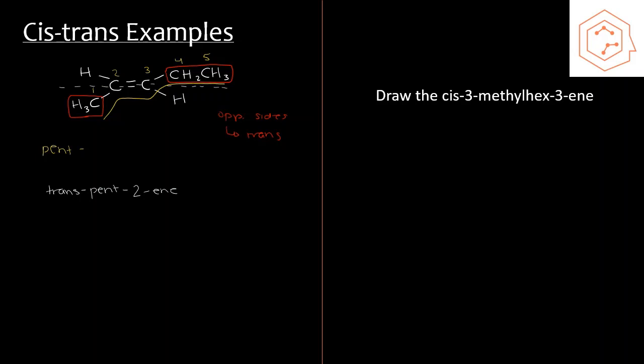To draw cis-3-methylhex-3-ene, we start by drawing the carbon double bond and build the rest of the structure around it. Since it's cis, both the longest alkyl groups will be on the same side. We can draw a horizontal line to help visualize this. From the name we know there's one substituent — a methyl group at carbon three — so we draw that in, along with carbons one and two of the parent chain on that side.